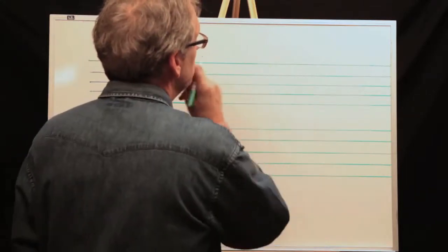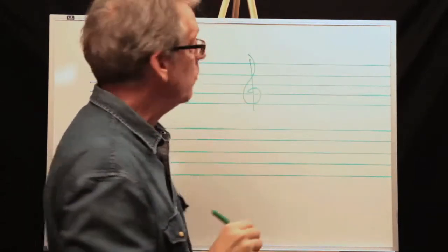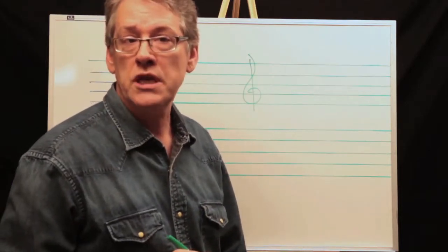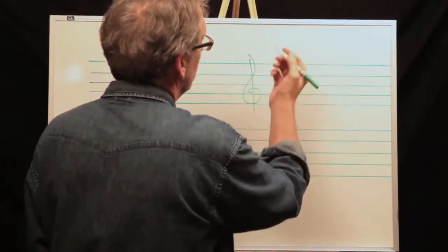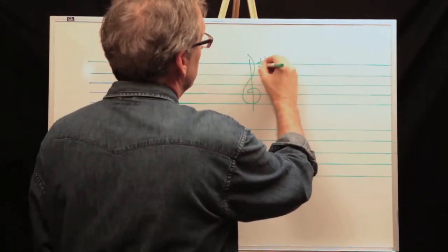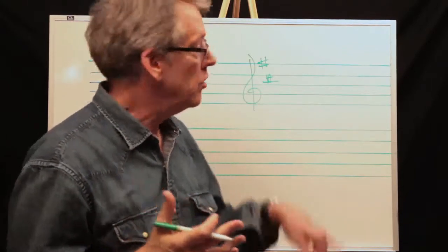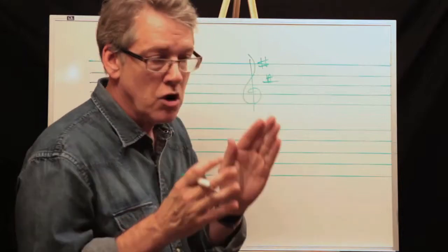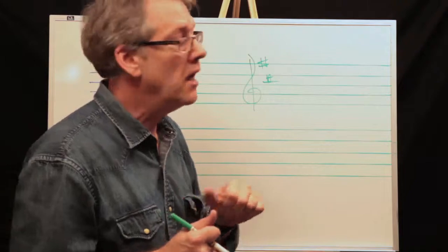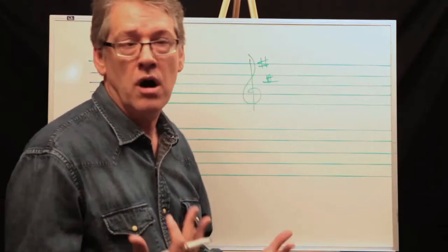The trumpet is up a whole step. So if we were to write our trumpet in the key of C, that's no accidentals. What's a whole step up from C? It's D. So if our concert pitch is in C, then we write our trumpet in D which is two sharps. That is going to take care of a lot of it.